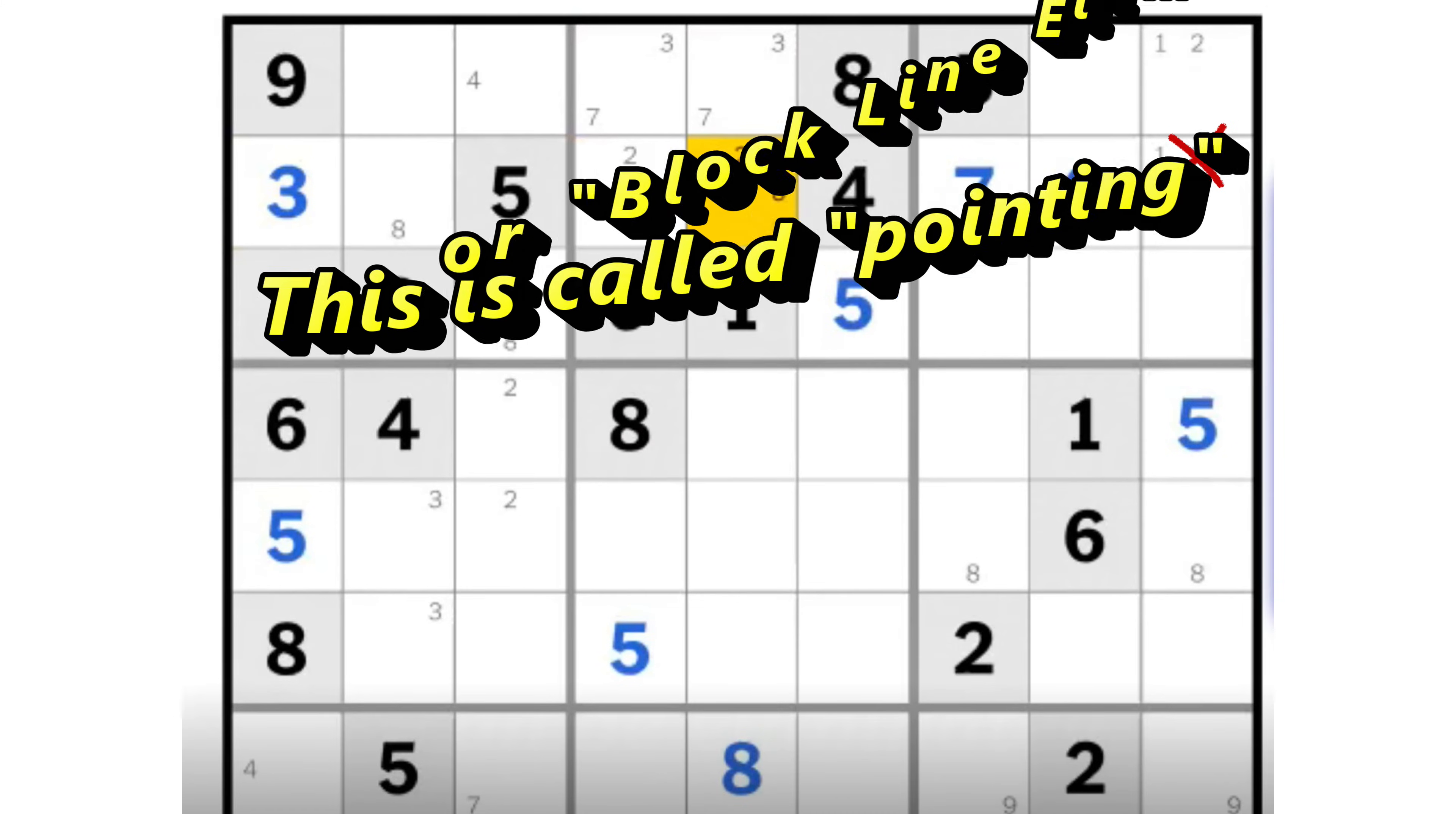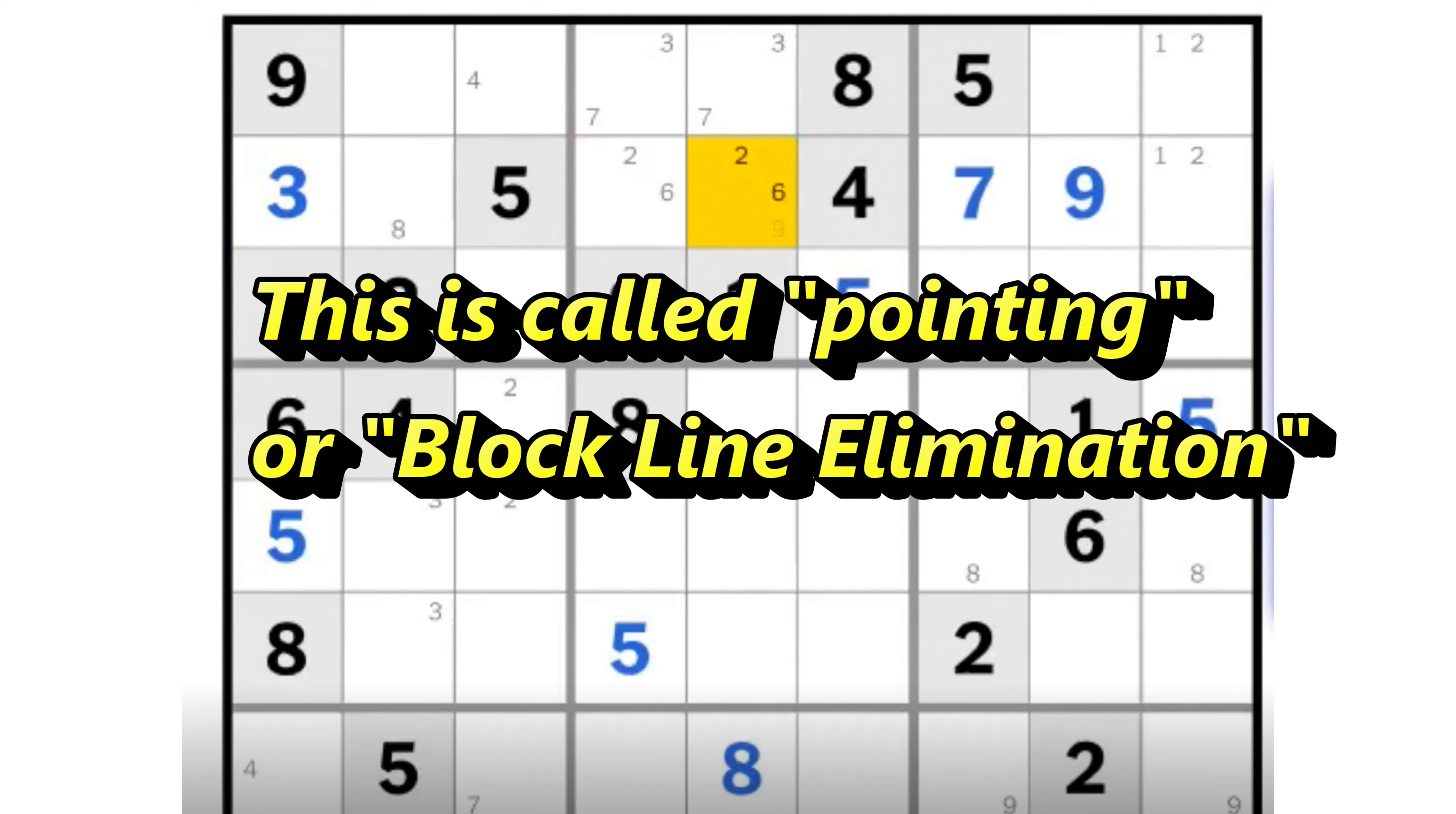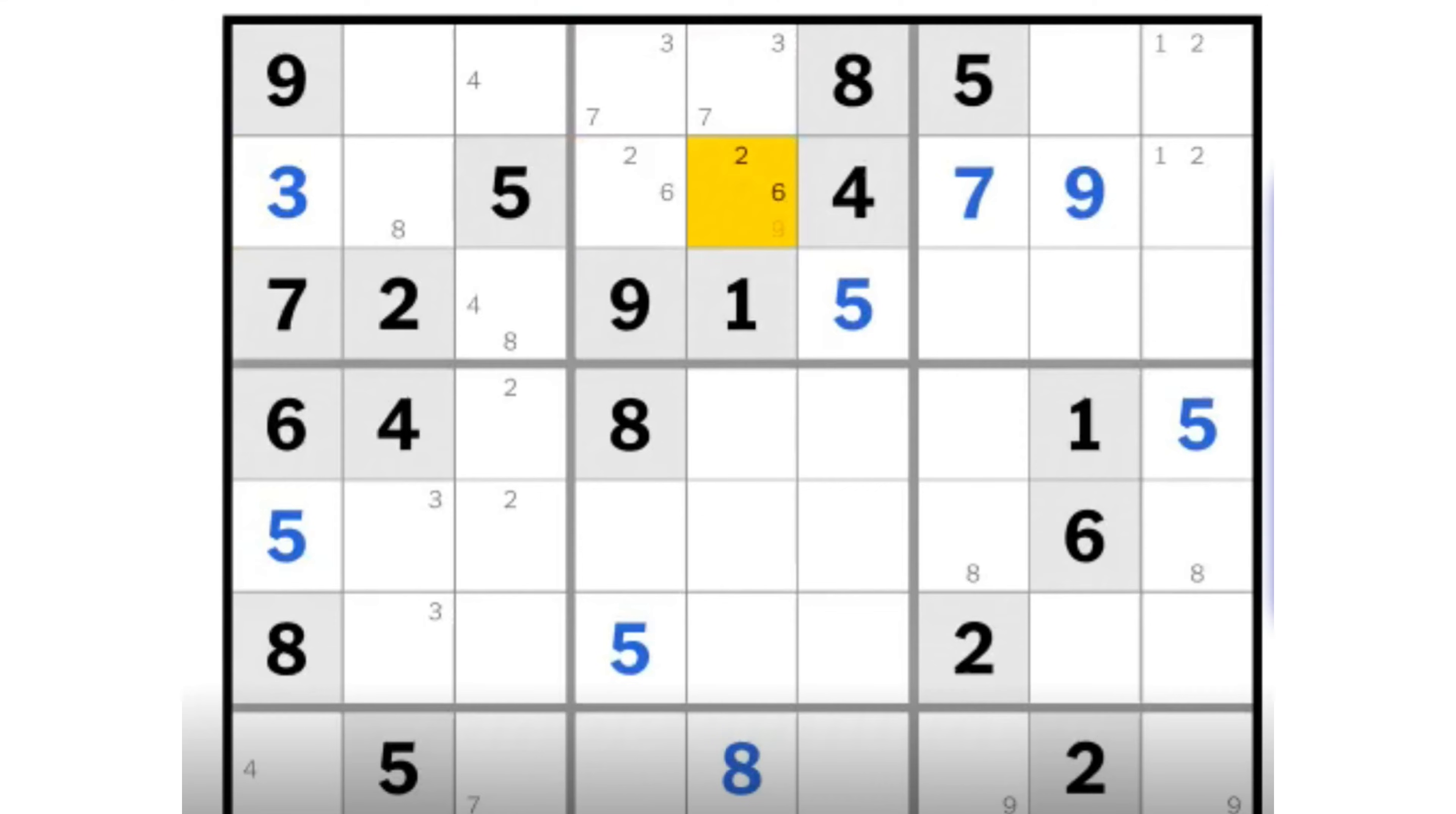This type of locked candidate is also called pointing or block line elimination. Let's have a closer look at this type of elimination technique.